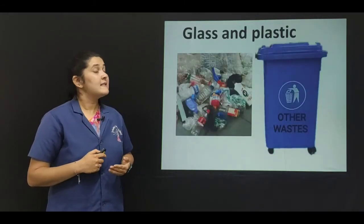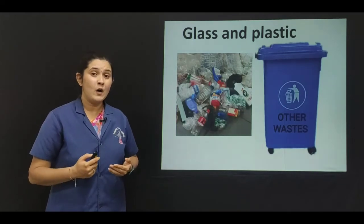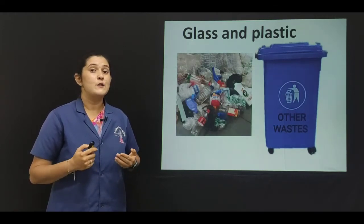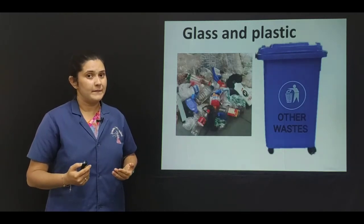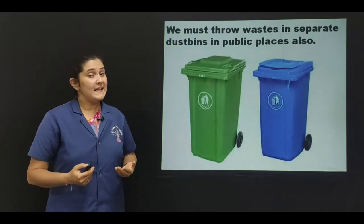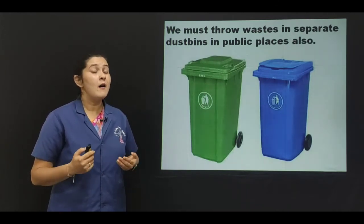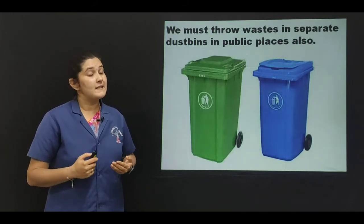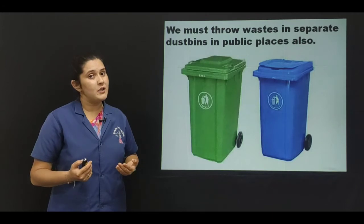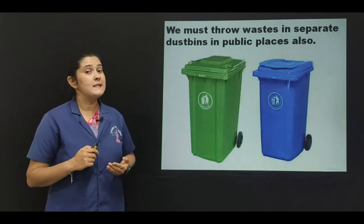Glass and plastic can be thrown in blue dustbins. They do not break down or mix with the soil and are bad for plants, so we need to throw this waste separately in the blue dustbin. We can keep green dustbins for plant waste and blue dustbins for other waste like plastic and glass, and give this waste separately to the garbage collector.